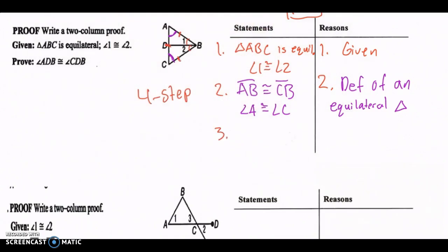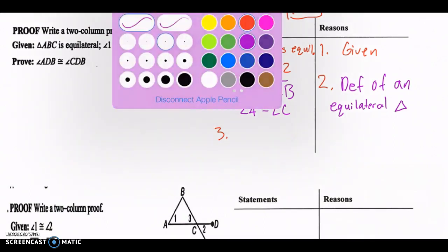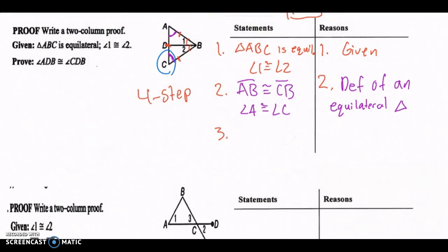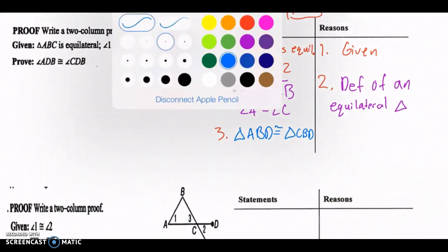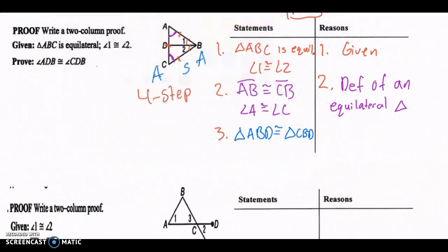And now step 3. What do we already see here? Do we have an angle? See this in blue. We have an angle, we have a side here, and we have that angle, right? So this is angle, side, angle. So we can see that triangle ABD is congruent to triangle CBD. And number 3, the reason for this is because angle, side, angle congruence.